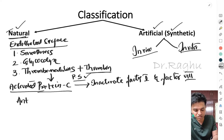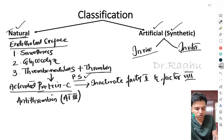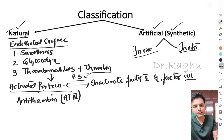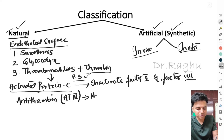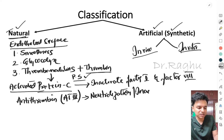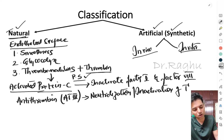Apart from endothelial factors, another very important naturally occurring anticoagulant is antithrombin, previously also called antithrombin 3. The function of antithrombin is that it binds with thrombin and causes neutralization or inactivation of thrombin.